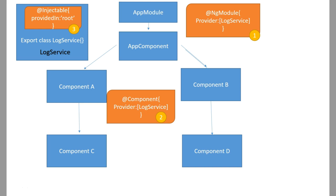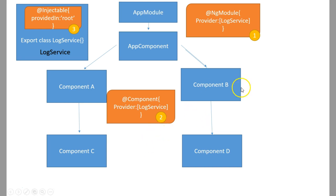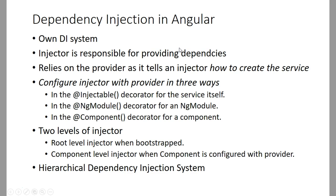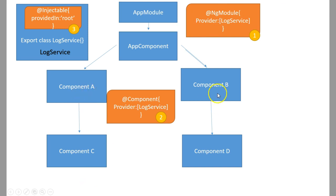In contrast, when using app module or app component, the service is loaded into the bundle even when it is not used by any component. So those are the three ways to register a service with the provider. Additionally, in Angular, injectors are created at two levels: a root-level injector and a component-level injector. The root-level injector is created when the application bootstraps, and whatever you provide in the NgModule provider will be loaded there.